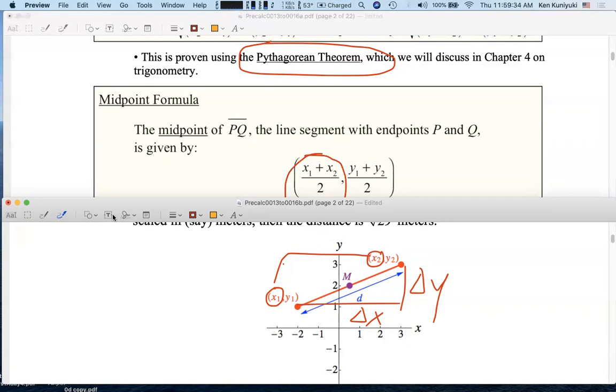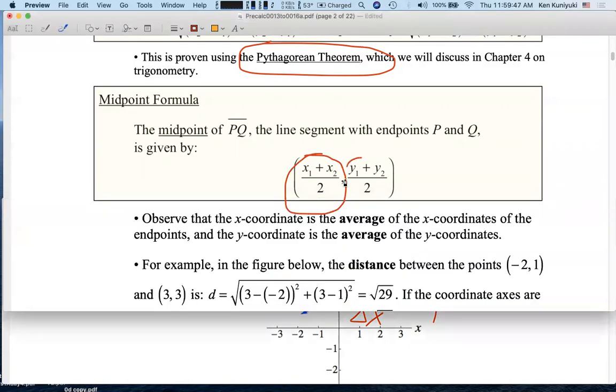Likewise, to get the y-coordinate of the midpoint, you take the average of the two y-coordinates: (y₁ + y₂)/2, just like with the x-coordinates. Remember to put parentheses to indicate that we have an ordered pair.